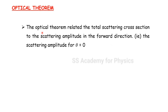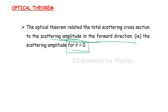This is the optical theorem. The total scattering cross-section relates to the scattering amplitude in the forward direction. Forward direction means the scattering angle theta equals zero. Sigma t is equal to 4 pi divided by k, dot Im f of 0.